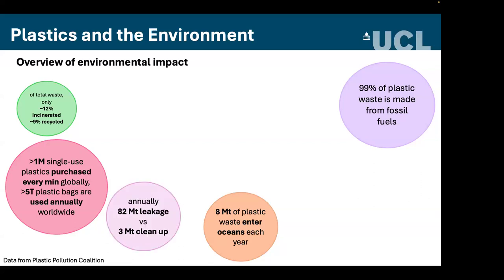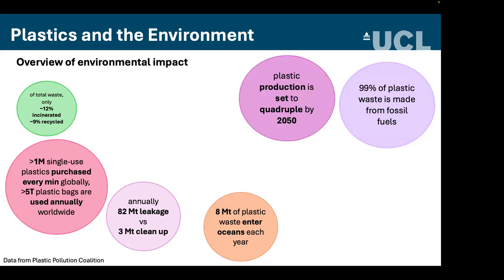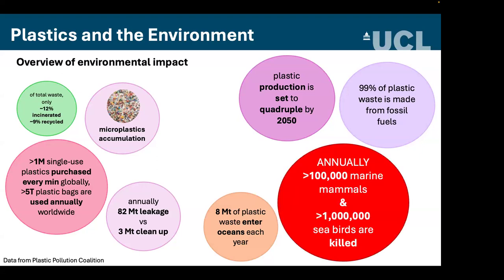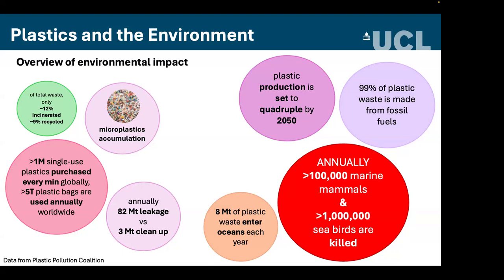99% of plastic waste is made from fossil fuels, and around 8 million tons of plastic waste enters the oceans each year. Annually, 82 million tons are leaked into the environment whilst only 3 million tons are recycled. Plastic production is set to quadruple by 2050, and there is unprecedented accumulation of microplastics in the environment, concerning because of their ability to enter our food chain. Annually, over 100,000 marine mammals and over 1 million seabirds are killed through ingestion or entanglement.